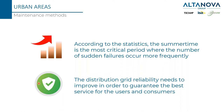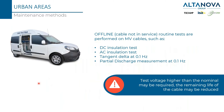For this reason the number of sudden failures is increasing, so the distribution grid reliability needs to improve in order to guarantee the best service for users and consumers. The typical tests that maintenance teams perform to understand cable condition are offline testings — they go to the primary substation where the cable is present and apply high voltage, then perform some tests.